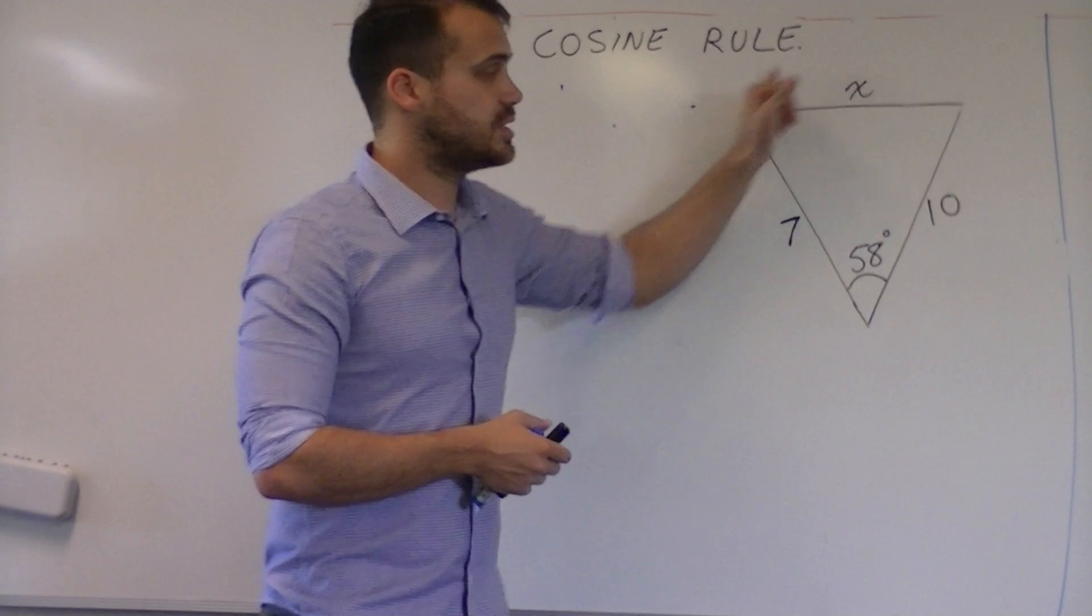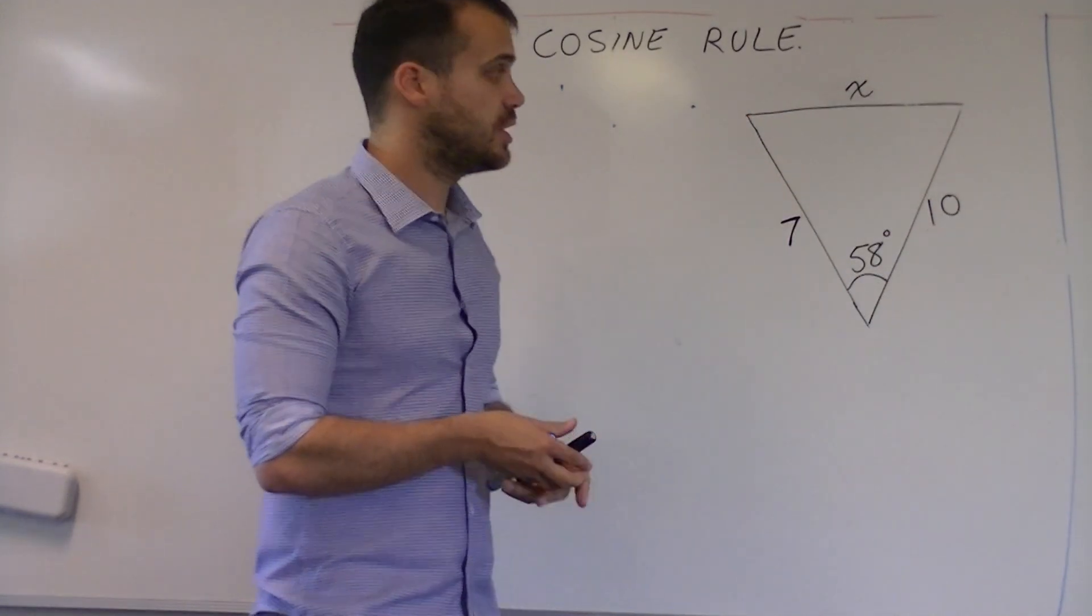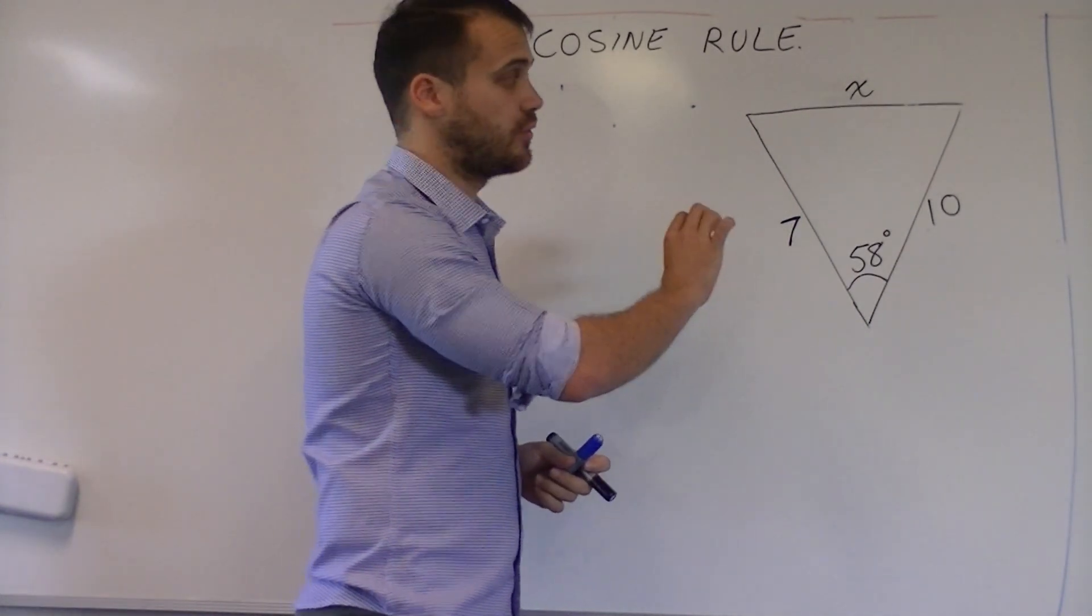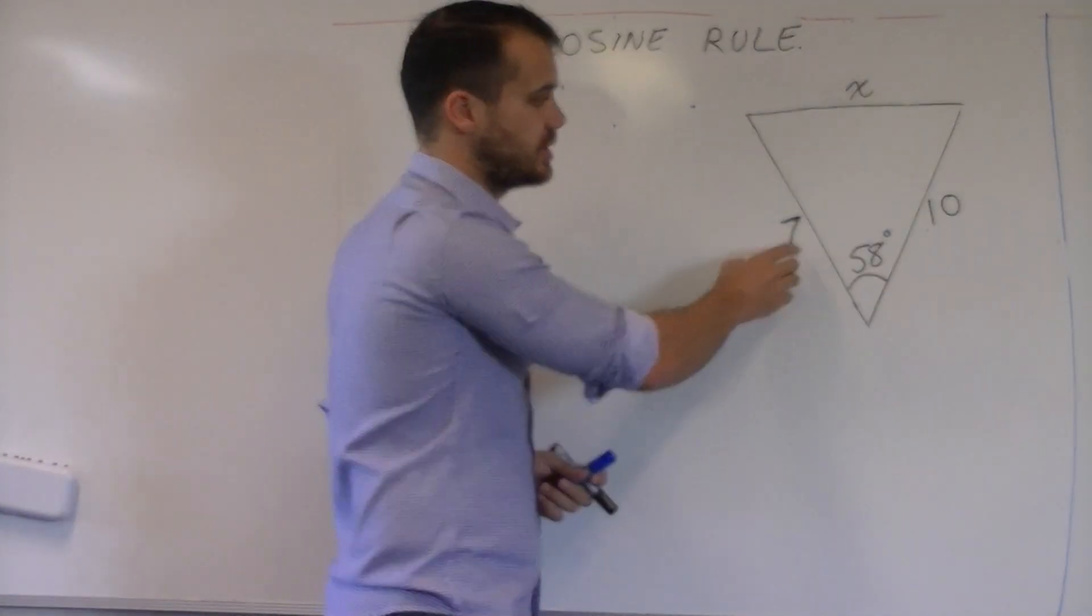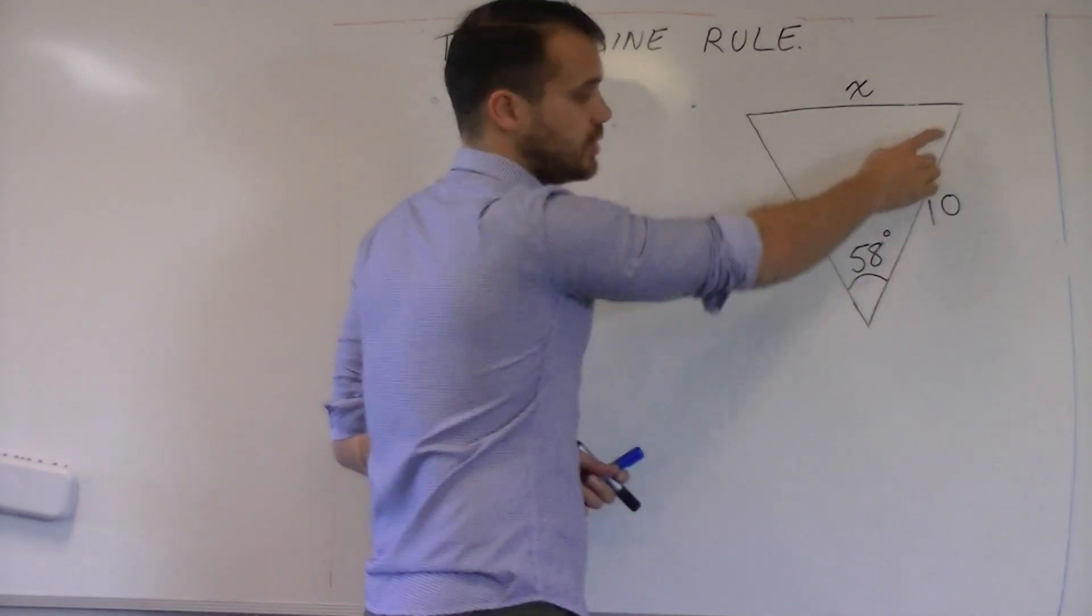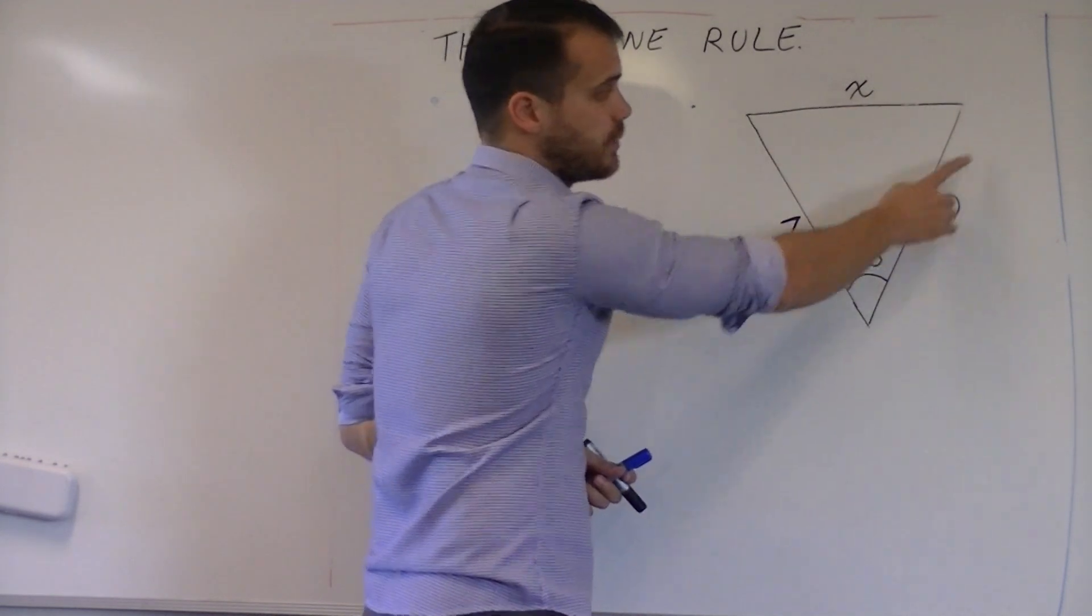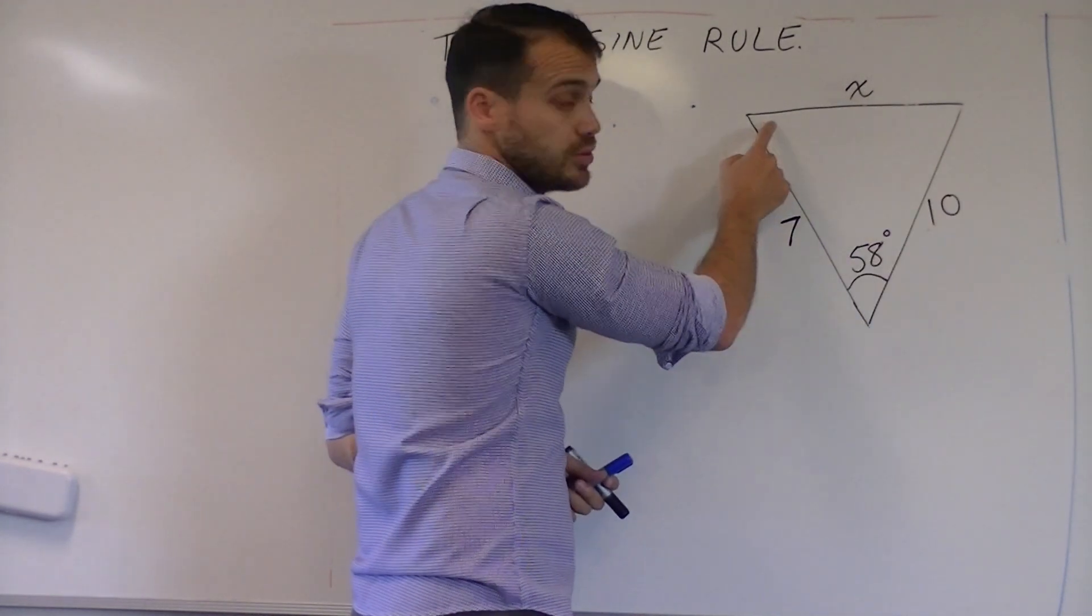Now in this particular triangle you would have to use it. The reason being that there's no pair of angle side. You can see that we know the number 7 here but we don't know that angle. We know that angle but we don't know that side. And we know that side but we don't know that angle.